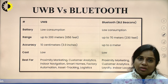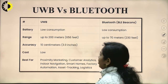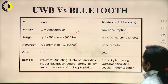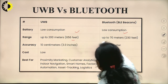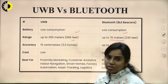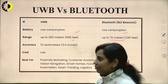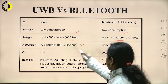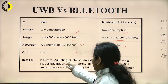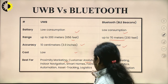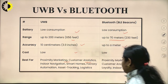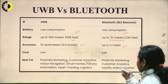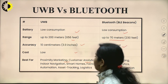Comparing UWB versus Bluetooth: battery consumption is very low in both technologies. For range, UWB covers up to 200 meters while Bluetooth covers up to 100 meters theoretically (about 70 meters practically). For accuracy, UWB provides up to 10 centimeters while Bluetooth provides up to 1 meter. Cost is low for both. UWB applications include proximity marketing, customer analytics, indoor navigation, smart home, factory automation, asset tracking, and logistics. Bluetooth is used for some of the same things like indoor location, customer analytics, and proximity marketing.